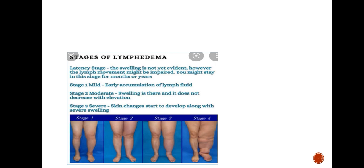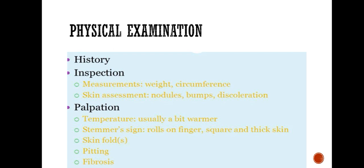Stages of lymphedema: Latency stage — swelling is not yet evident, however limb movement might be impaired. You might stay in this stage for months or years. Stage one is mild, with early accumulation of lymph fluid. Stage two is moderate — swelling is present and does not decrease with elevation. Stage three is severe — skin changes start to develop along with severe swelling.